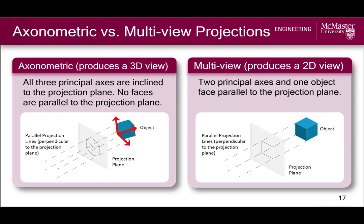In axonometric projections, all three principal axes are inclined to the projection plane, meaning none of the principal faces of the bounding box are parallel to the projection plane, and this is what results in that three-dimensional looking view. With multiview representation, two principal axes and one object face, or bounding box face, are parallel to the projection plane, resulting in a two-dimensional view instead.